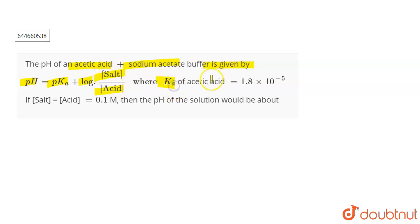Ka, which is the dissociation constant of the acetic acid, is given to you as 1.8 times 10 to the power minus 5, and the concentration of salt and acid that equal to 0.1. What will be the pH of the solution?